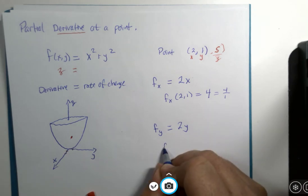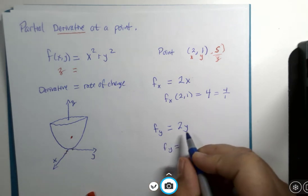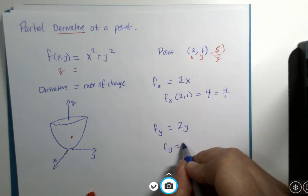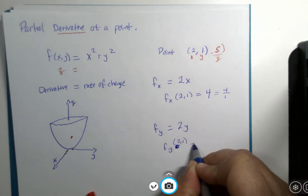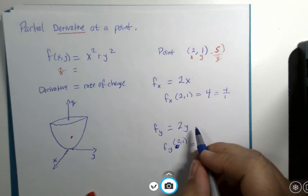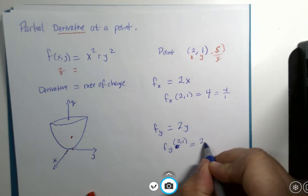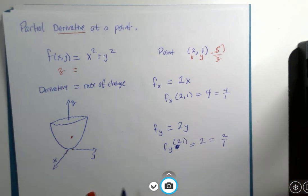The partial with respect to y. I should put parentheses here. 2 comma 1. My apologies. Let's see. 2 times 1 is 2. Or 2 over 1. At this place in the curve, it's not as steep in the y direction. The change isn't as great.